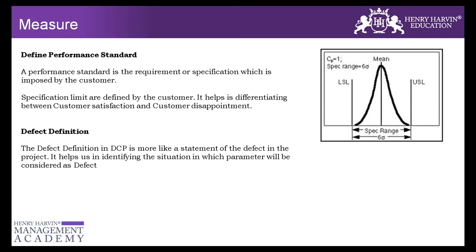The third element in the data collection plan is the defect definition — when do we call the project metric a defect? For example, with turnaround time, a defect could be when we could not resolve the customer query within 30 minutes, one hour, or 24 hours — whatever standard has been set. Below that threshold, it would be a defect. This must be clearly mentioned so that every team member understands when we are calling something a defect.